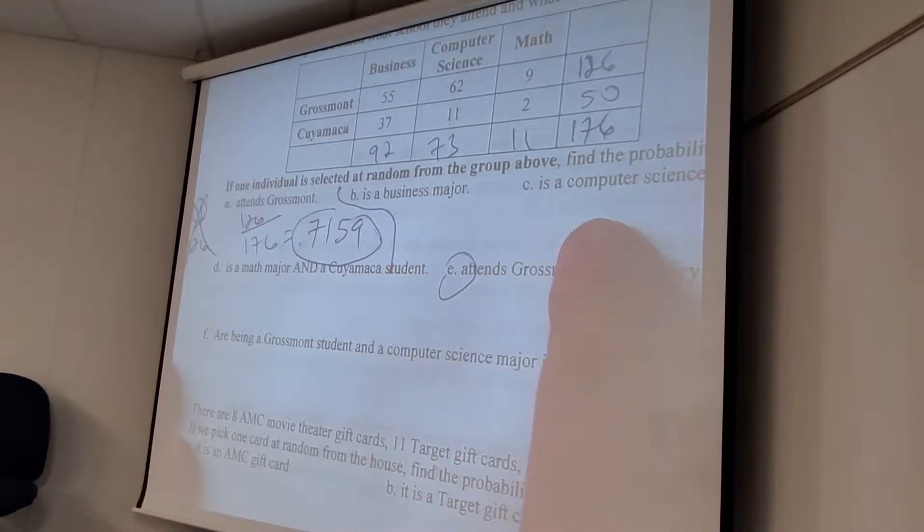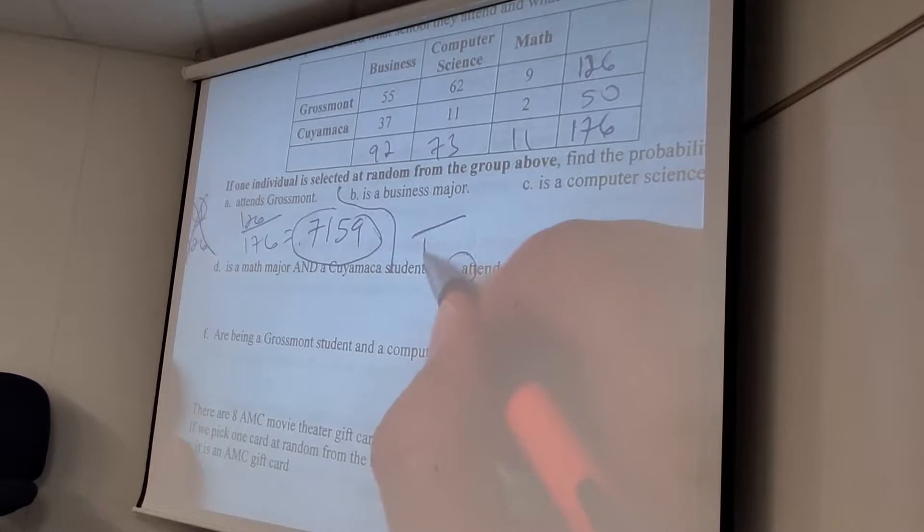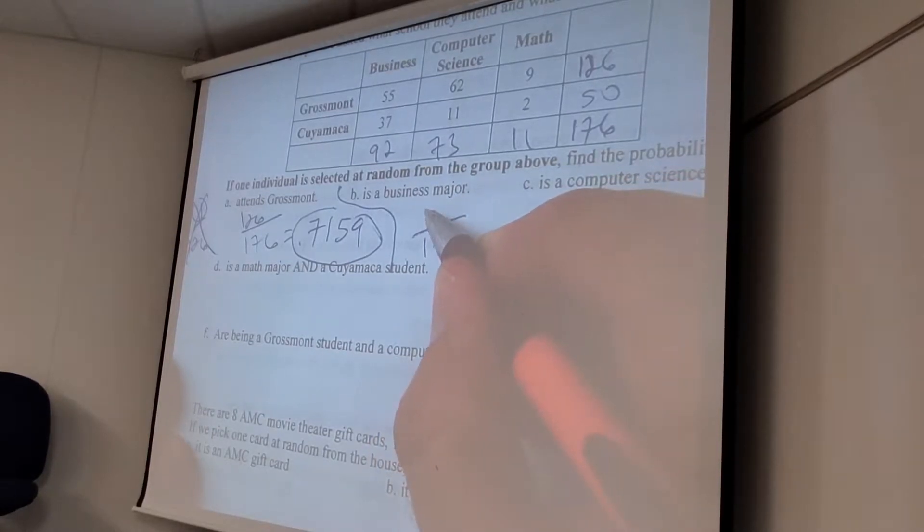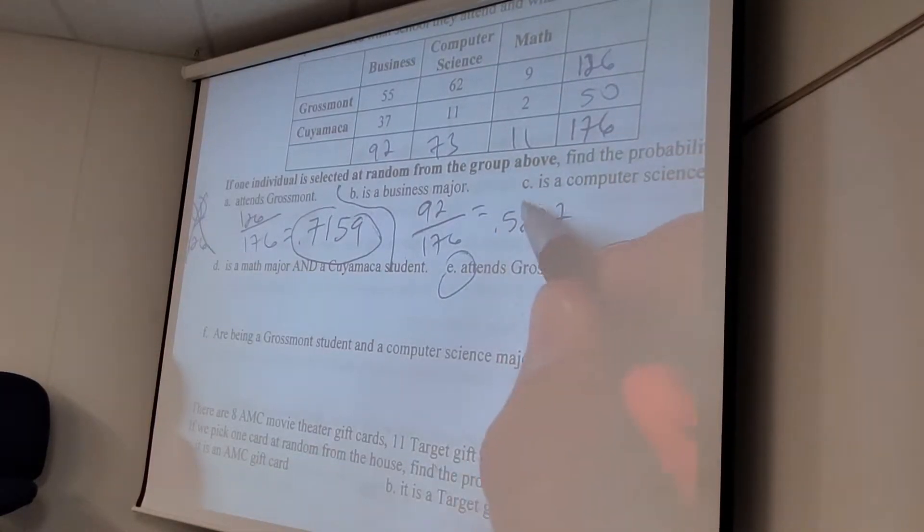And then how many attend Grossmont? 126. And then whatever the hell that is. 7159? Okay. So almost 72% show up. Also, this didn't show up today, which is nice. These don't build on each other. B is its own problem. C is its own problem. So out of 176 students, how many are business majors? 92. And then what's that? 52-27? Okay. I like it.